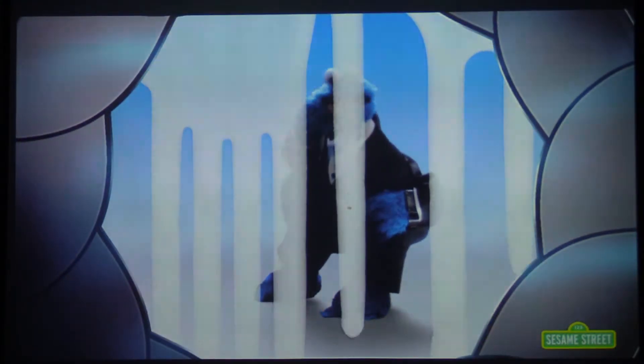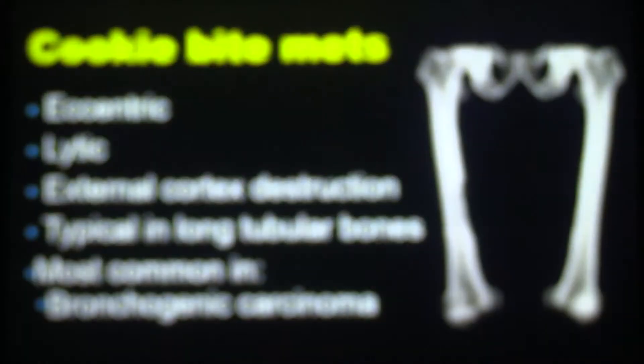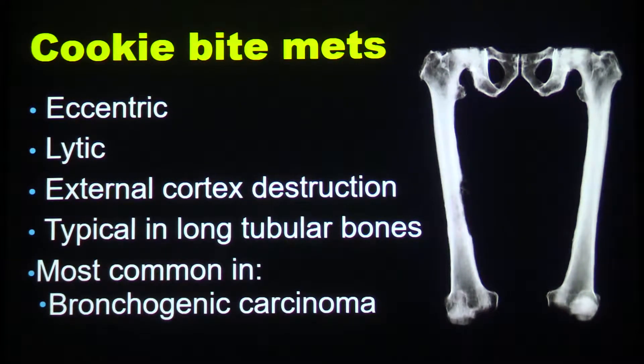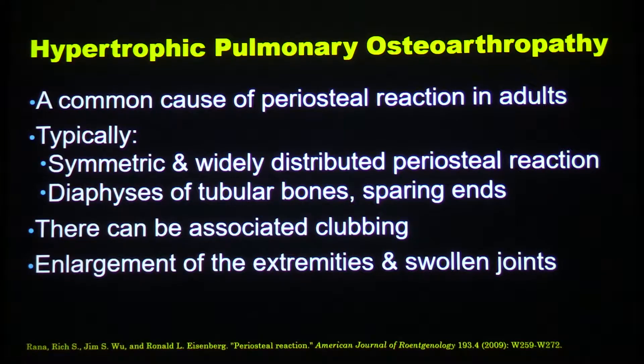Quick recap: we have a cortical lytic lesion on one side with a soft tissue component, a periosteal reaction that extends to the other side and also into the other thigh, and we have a chest tumor. We're talking about a cookie bite metastasis from the lung, which is eccentric lytic with external cortical destruction, typical in tubular bones, most common in bronchogenic carcinoma. The other feature is hypertrophic pulmonary osteoarthropathy, which is a common periosteal reaction in adults that have some sort of lung lesion.